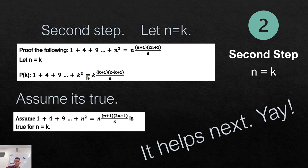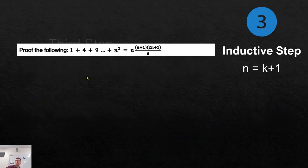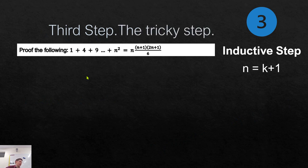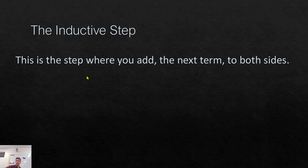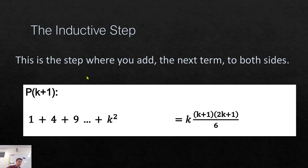Third step, the tricky step, let n equal k plus one, inductive step. This is the step where you add the next term to both sides.